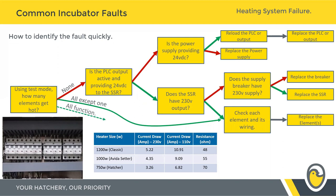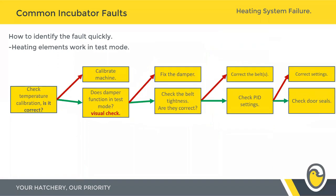If all your heating elements function as expected in test mode but you're still aware of a fault on the heating system, we move to a second diagnostic tree. This is the order we get our engineers to check the heating control systems — from left to right, most common to least common faults. Straight away, check the calibration of the machine — run through for a good hour or so to verify that the temperature probes are reading accurately. If one zone is calibrated too low, the control is going to artificially heat that zone, fighting the neighboring zones. All zones need to be tightly calibrated together.